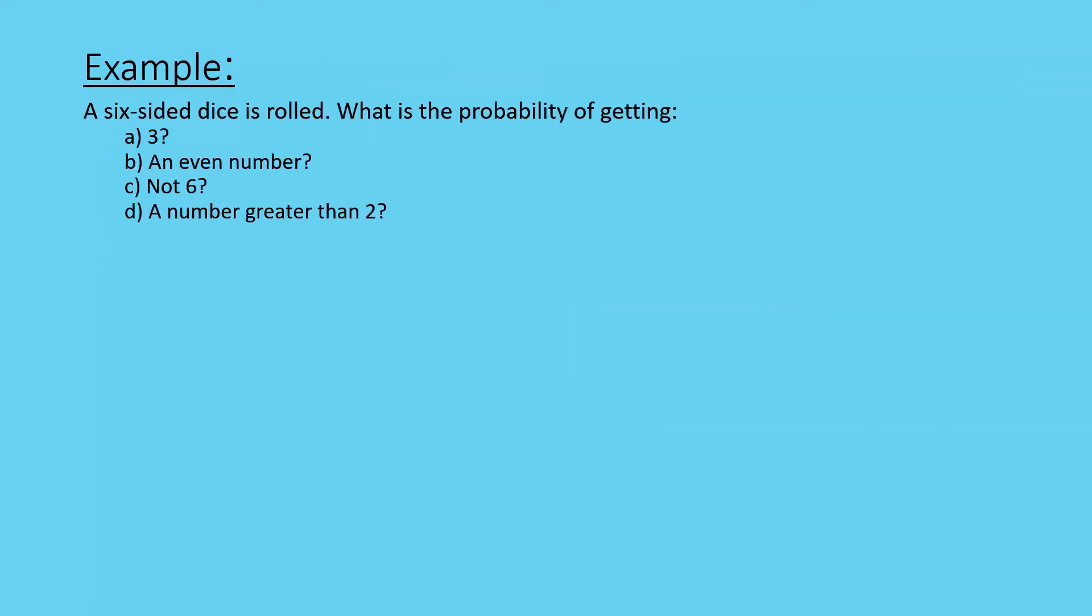We've got a six-sided dice. And we roll it. What's the probability of getting a three? An even number. A six. Or a number greater than two. Well, if we look at our answers here.